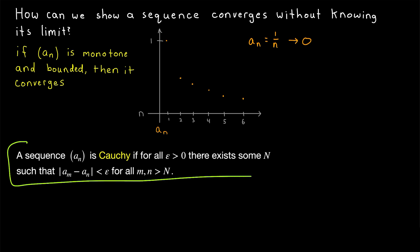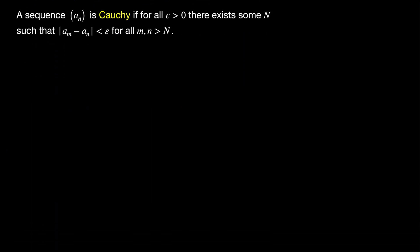And the Cauchy criterion formalizes this idea. So here is our definition: a sequence a_n is Cauchy if, for every positive real number epsilon, there exists a point in the sequence after which any two terms are within epsilon of each other. Stated in simple language, a sequence is Cauchy if, for every epsilon greater than 0, the terms of the sequence eventually are all within epsilon of each other. For example, you might let epsilon equal 1/100, and maybe after the 1,000th term of a particular sequence, any two terms after that point are within 1/100 of each other.